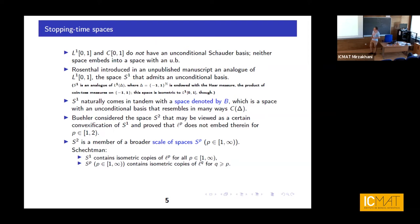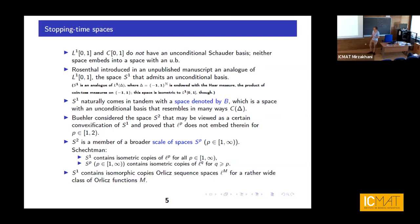We consider a kind of complex generalization that we now call S2, because it fits nicely in the scale. It is not a Hilbert space, but it is more or less in the same place on the scale where L2 is, between L1 and L-infinity. It is proved that LP does not embed in that space for p between one and two. More generally, SP contains isometric copies of LQ as long as q is at least p.